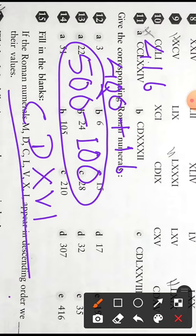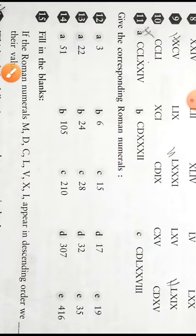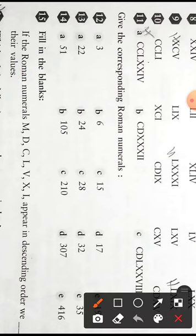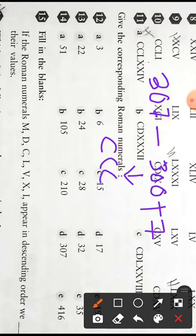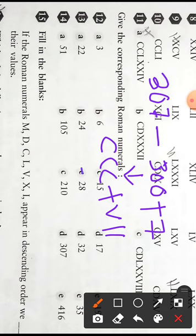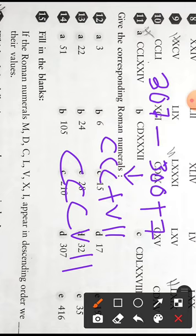Let us try one more question like 307. 307 can be written as 300 plus 7. 300 means C repeated three times, and then you add 7 with it. It becomes CCCVII. This is how we write. In the same manner you can try another question yourself.